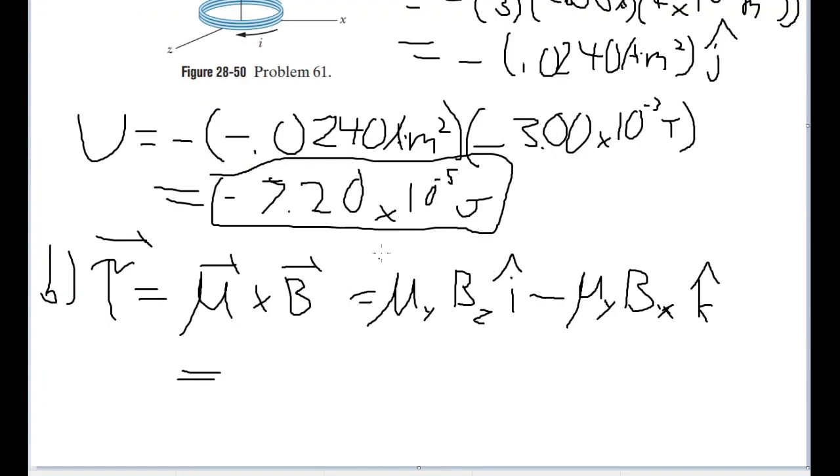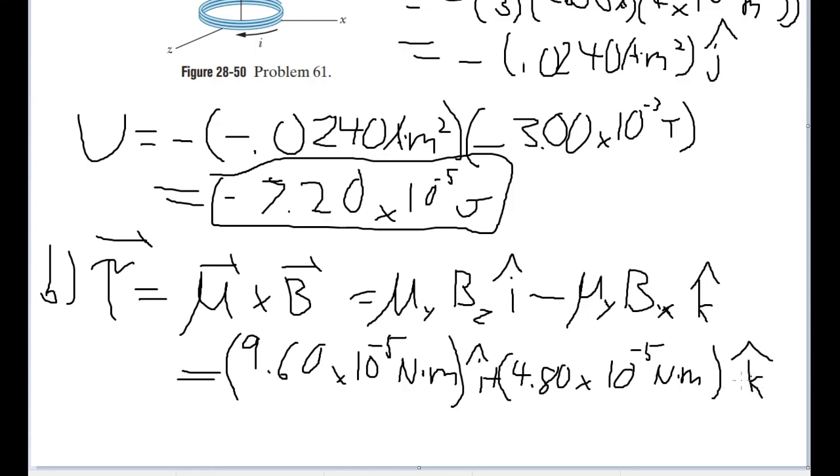When we do these calculations and write it out, subbing these values in and leaving the unit vectors the way they are, then the answer I would get for this is going to be 9.6 times 10 to the negative fifth newton meters, and that is the vector in the i direction plus 4.8 times 10 to the negative fifth of a newton meters in the k direction. In unit vector notation, which is how I kept it, this is what our vector for the torque is going to be due to the magnetic field.